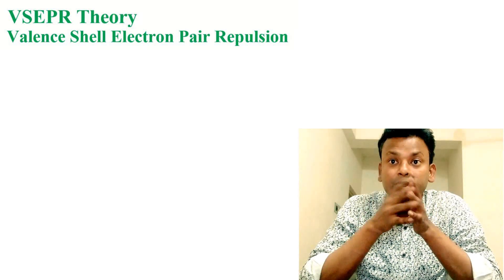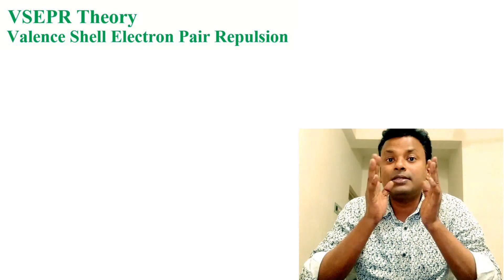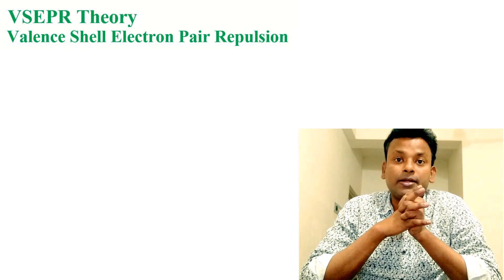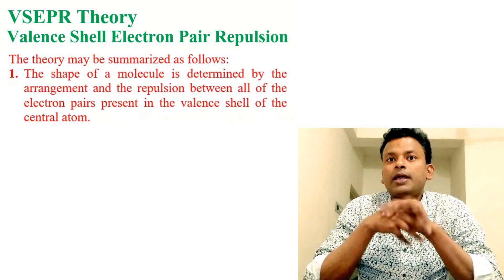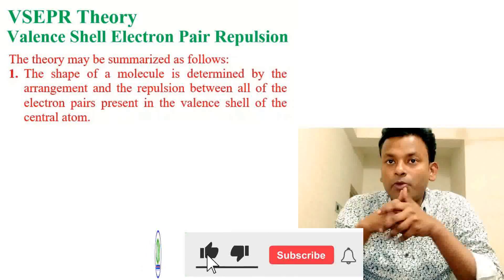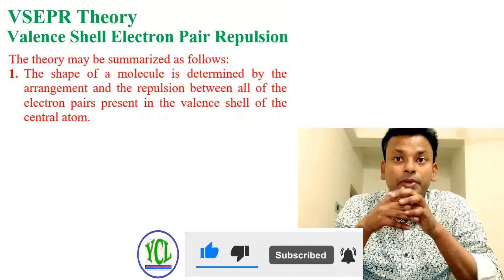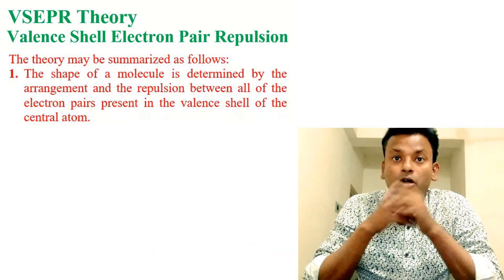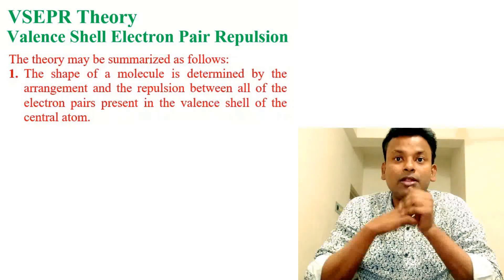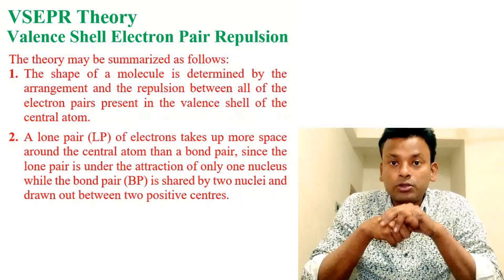The postulates may be summarized as follows. First point: the shape of a molecule is determined by the arrangement and the repulsion between all of the electron pairs present in the valence shell of the central atom. Point two: a lone pair of electrons takes up more space around the central atom than a bond pair.